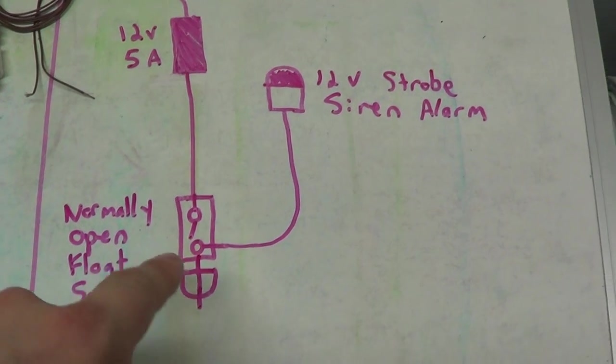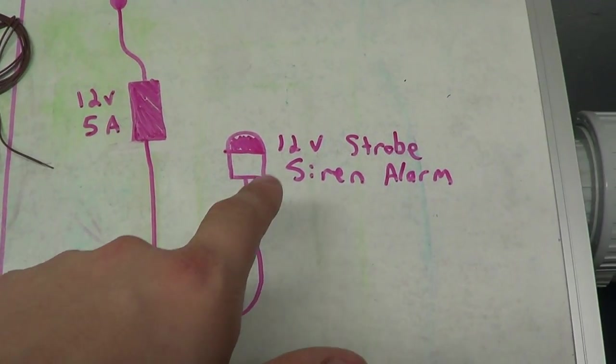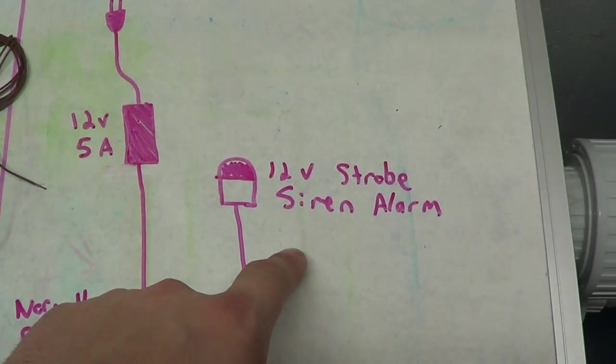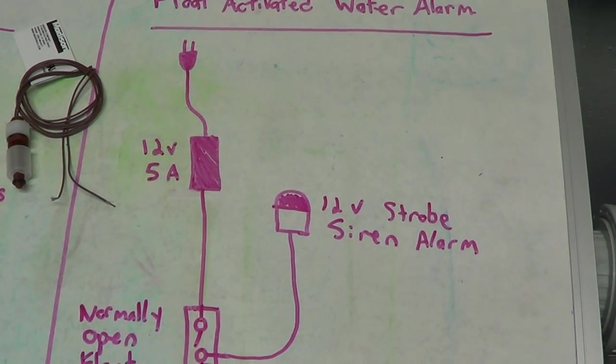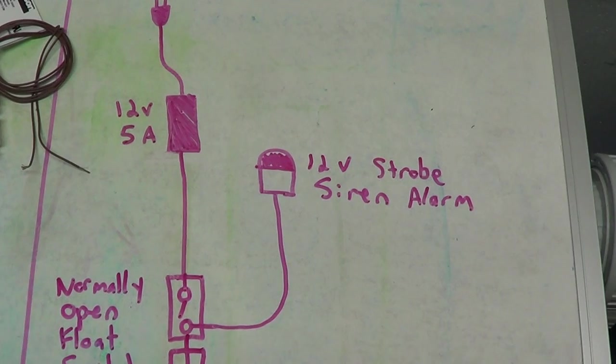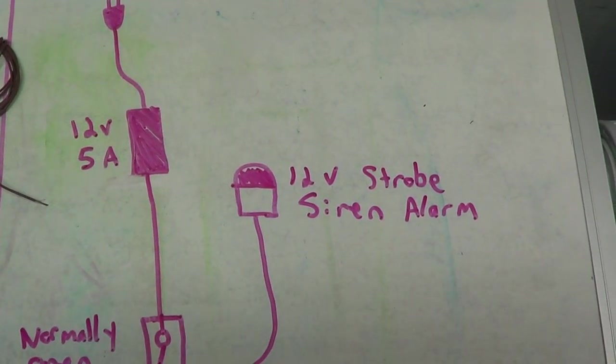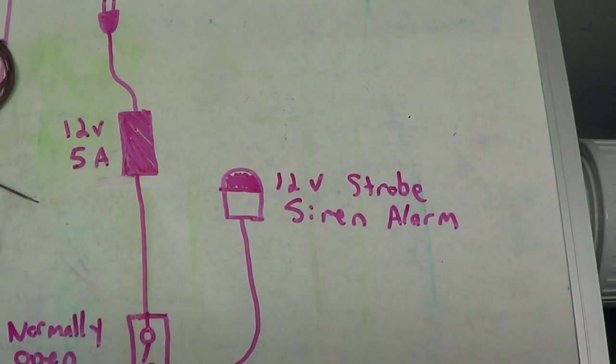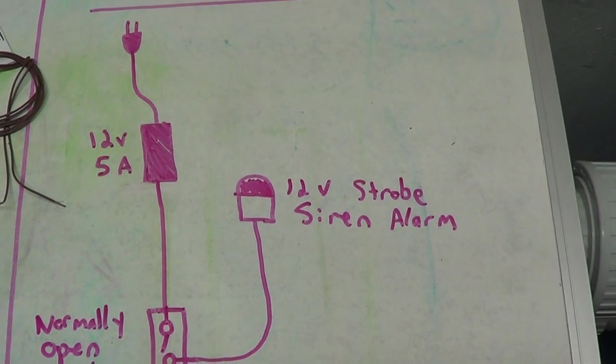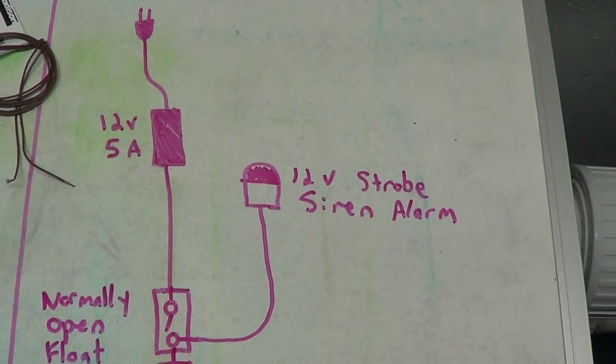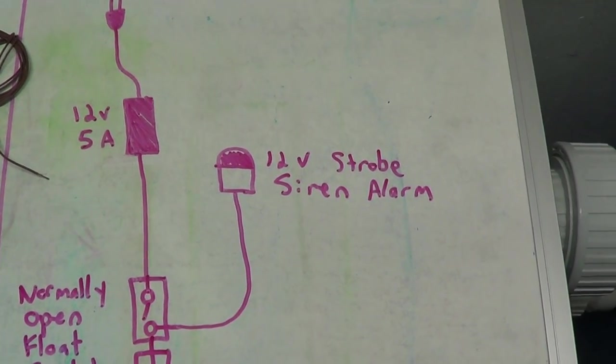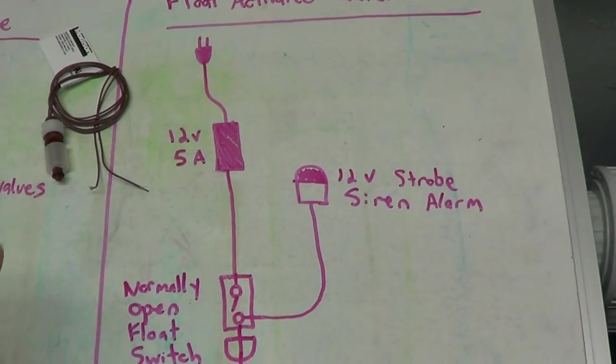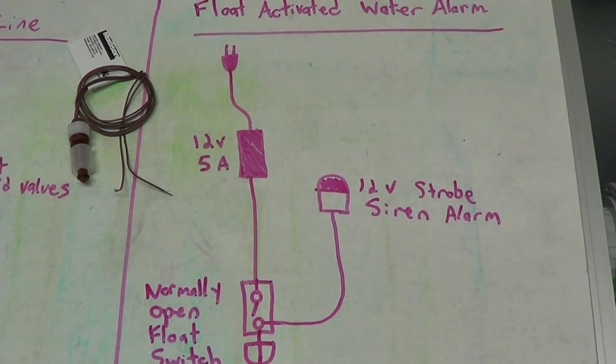Okay, so we go from the normally open float switch directly into a 12 volt strobe siren alarm. And you can google these. Next week you'll be able to see one on my channel. They're really cool. They're actually meant to be put like above doors that aren't supposed to be opened. You know, if someone opens a door that they're not supposed to open, it kicks this thing on and it basically strobes a red light.